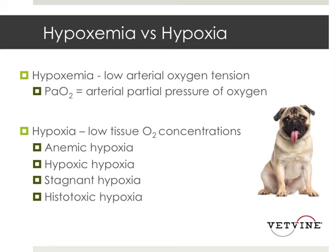Anemic hypoxia is where you don't have enough hemoglobin to carry oxygen to the tissues, but your dissolved oxygen concentration may be normal. Hypoxic hypoxia involves oxygen issues at the tissue due to low dissolved oxygen concentration — this is when hypoxemia does lead to hypoxia.